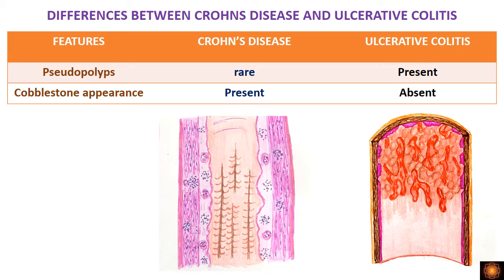We have now covered the external surface findings — creeping fat, wall thickness, lumen size — and the mucosal surface findings: pseudopolyps in ulcerative colitis and cobblestone appearance in Crohn's disease.